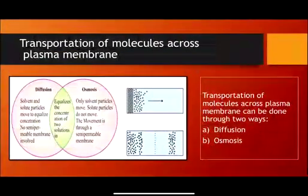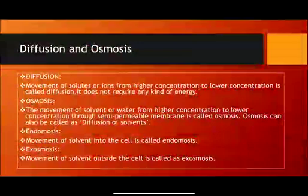Now we will move on to the transportation of molecules across the plasma membrane — the moving of molecules inside and outside the plasma membrane. There are two different ways: diffusion and osmosis. Diffusion is the movement of solutes or ions from higher concentration to lower concentration, and it does not require any kind of energy.